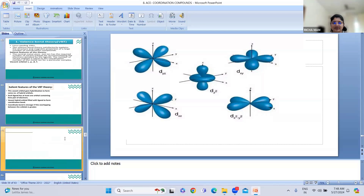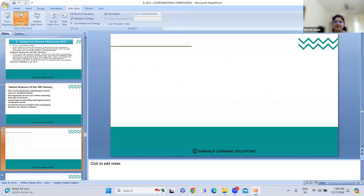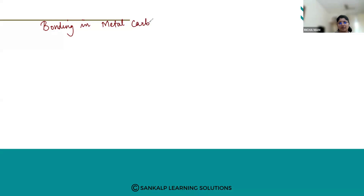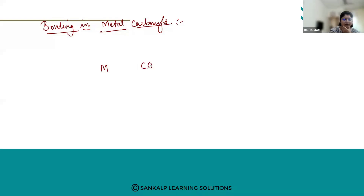The next part which we are going to discuss is the bonding in metal carbonyls. Let us discuss the bonding in metal carbonyls. In bonding in metal carbonyls, there is a metal and a carbonyl group. Carbonyl is CO — that is your carbonyl group. The bond between the C and O is a triple bond. So the metal carbonyls have both types of bond present between the metal and the carbon.